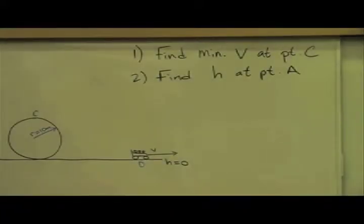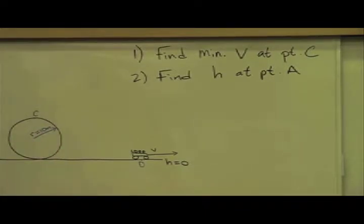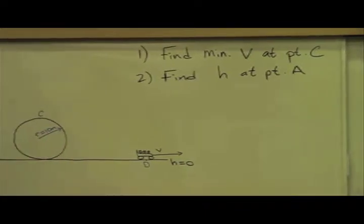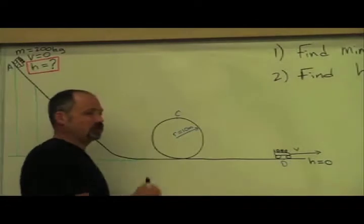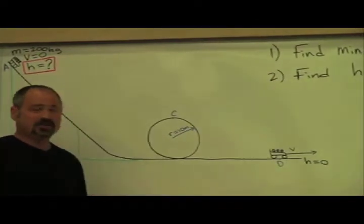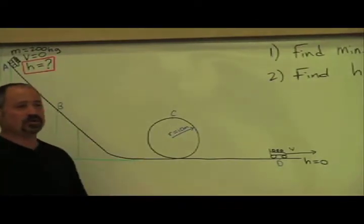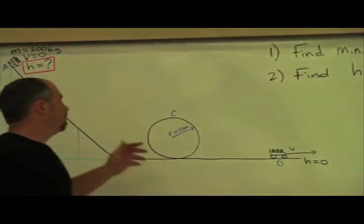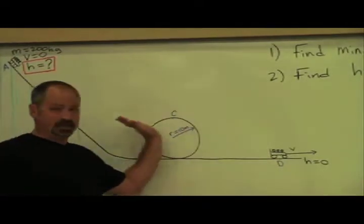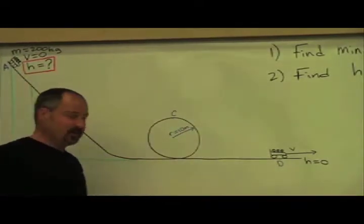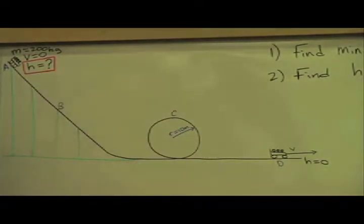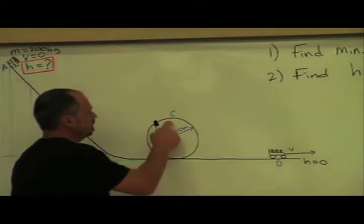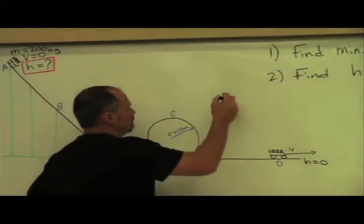When you're going in a loop, you need a centripetal force. It's a centripetal force that keeps you going in a circle. It's a centripetal force that provides the centripetal acceleration to change your velocity in this arc. So let's first find the minimum speed here.